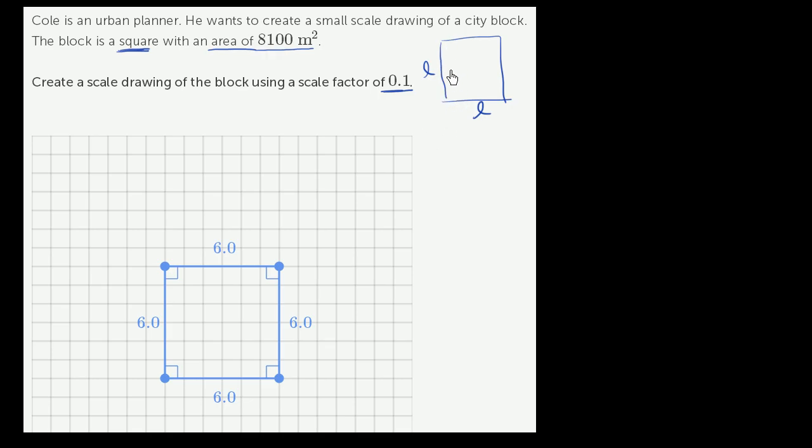We know that the area is just going to be the length times the length. The length times the length is going to be equal to 8,100. Or we could say that our length squared is going to be equal to 8,100.